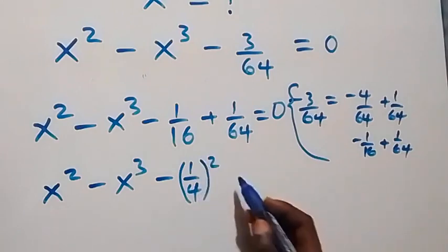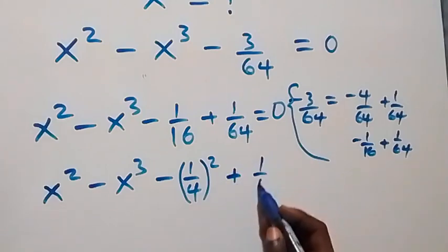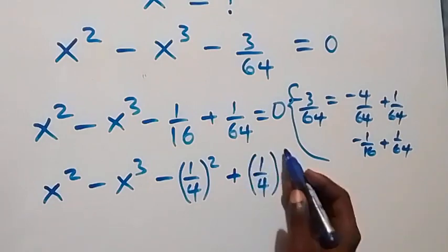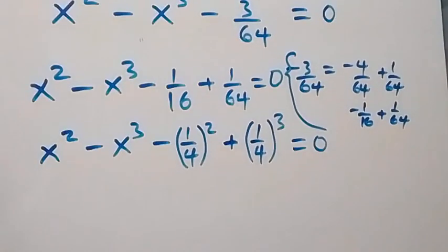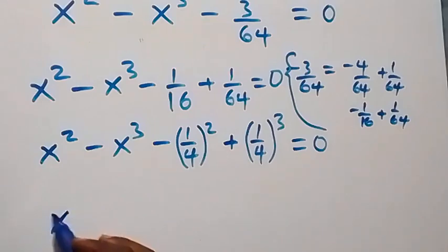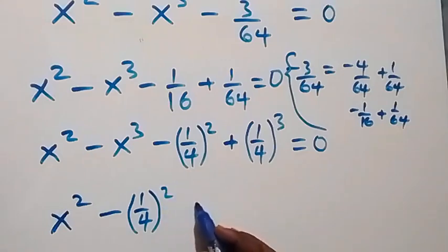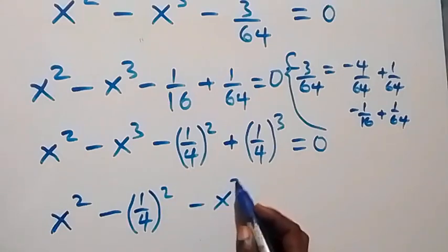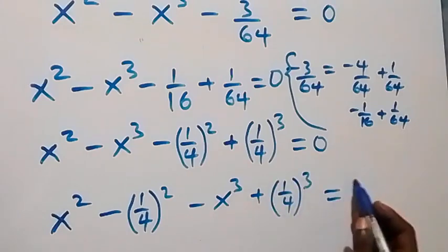Since 1 over 4 squared equals 1 over 16, and we also write plus 1 over 64 as plus 1 over 4 cubed. Then we bring the squares together: x squared minus 1 over 4 squared, and the cubes together: minus x cubed plus 1 over 4 cubed, all equals zero.